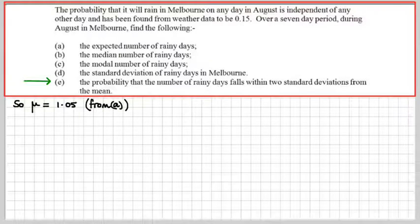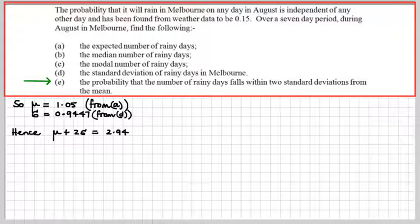We know that the mean is 1.05 from part A. We also know that the standard deviation is 0.9447 to four decimal places from part D. So let's work out our interval of μ plus or minus 2σ. So μ plus 2σ is 2.94, and μ minus 2σ is, look at this, we've got a negative value.